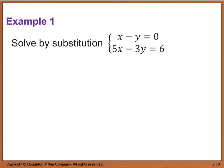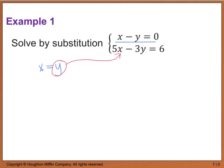Let's start out by looking at example one, which tells us to solve by substitution. This bracket here means that we have a system — here's one equation, here's the other equation. When solving by substitution, you want to use one of the equations that has a variable already isolated if possible. Looking at the top equation, both x and y have coefficients of one, so I'll get x by itself: x equals y. Then wherever I have an x in the second equation, I plug in y and solve.